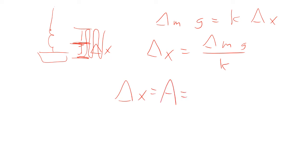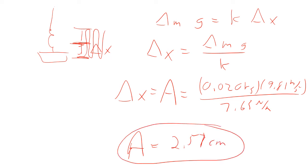And delta M is 20 grams, so it's 0.02 kilograms, times 9.81 meter per second squared. And then what you do is you divide by 7.63 newtons per meter. So the amplitude comes out to be equal to 2.57 centimeters. So that's how far up and down it goes.